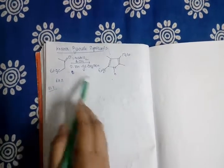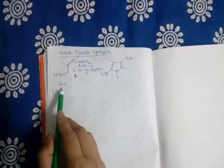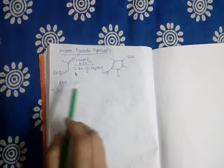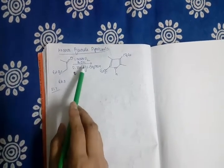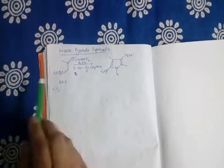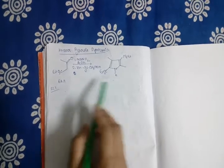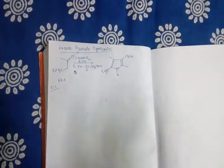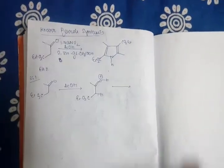This video is about Knorr pyrrole synthesis. Your starting material is ethyl acetoacetate and the reagents are aniline, acetic acid (ACOH), and zinc glacial acetic acid. This is the Knorr pyrrole product. The mechanism is as follows in step one.